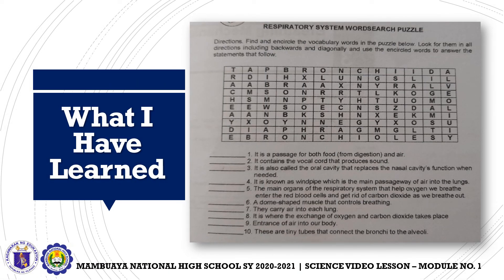What I Have Learned. In this activity, we will be answering a Respiratory System Word Search Puzzle. Find and encircle the vocabulary words in the puzzle below. Look for them in all directions, including backwards and diagonally, and use the encircled words to answer the statements that follow. I believe you will be able to do that one on your own. Enjoy answering the activity!